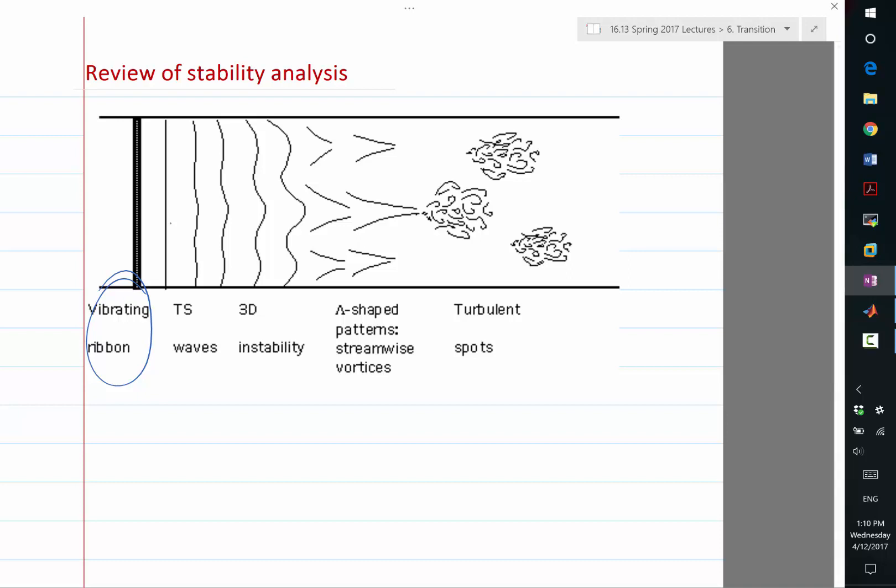And we are going to discuss today, later on, about receptivity. That is one of the mechanisms of how an external perturbation, such as sound waves or vibration of the solid body underneath, can somehow transfer into the TS waves, the Tollmien-Schlichting waves.